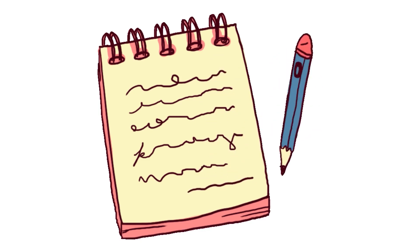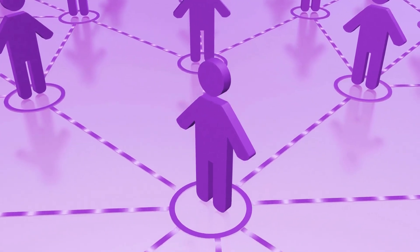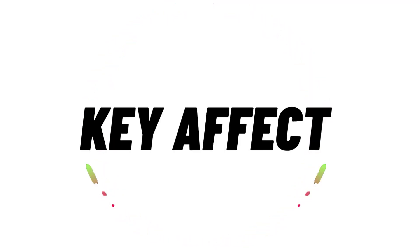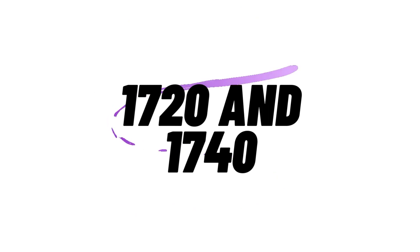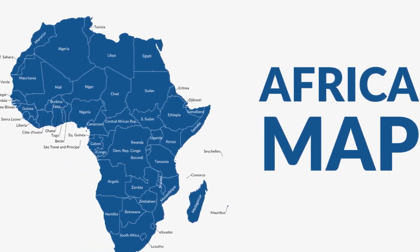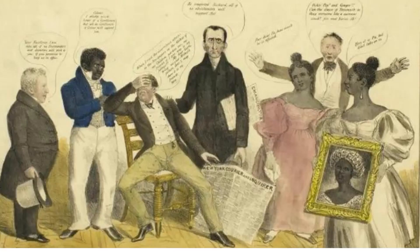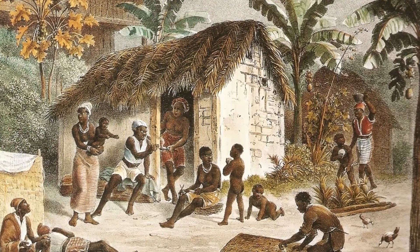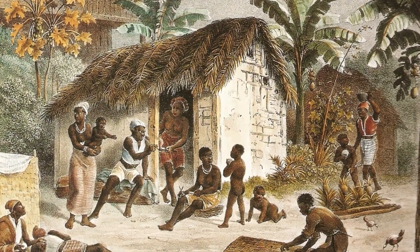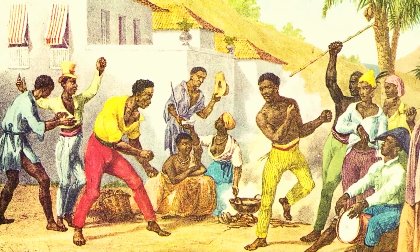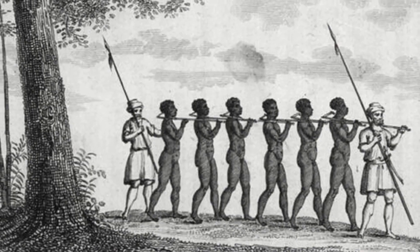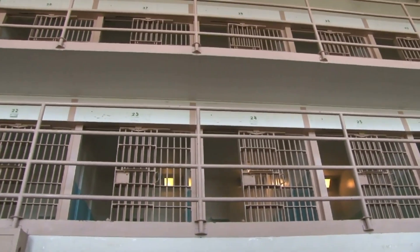It is also believed and written about from many historians' point of view that another positive influence the various African people had a key effect on was the institution of the family. It is believed that between 1720 and 1740, the increase of new slaves from Africa and the slaves that were already here having their own babies began a socializing mentorship of sorts, where the older generations would help younger generations gain and grow the adaptive socializing agents necessary to survive under the harshest and brutal strains of that life.